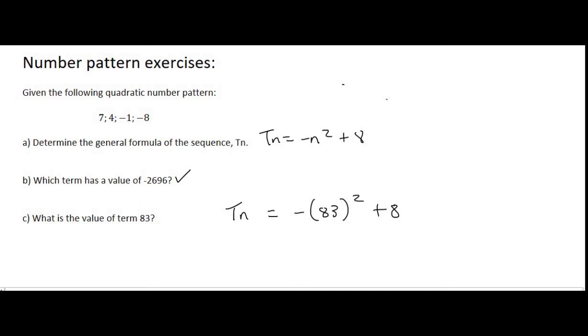You plug that in on the calculator. And you would get an answer of term 83 will be minus 6881. So what that means is that if you had to carry on with this pattern, once you get to the 83rd term, there would be a value of minus 6881 at that point.